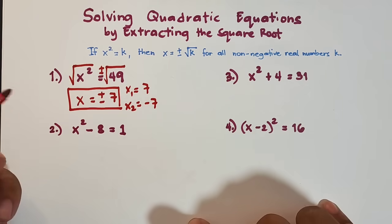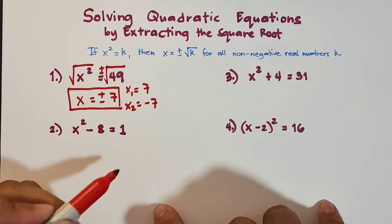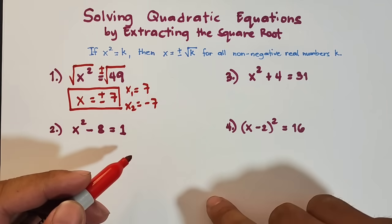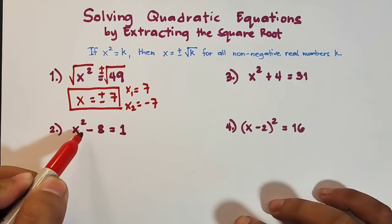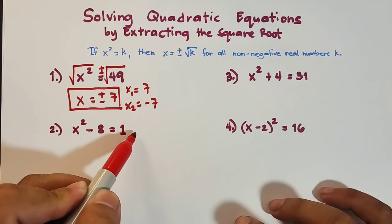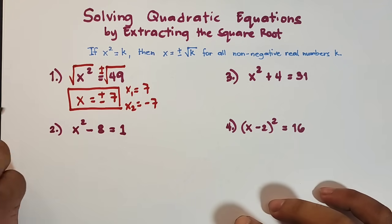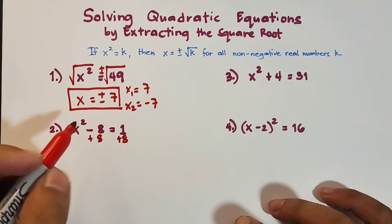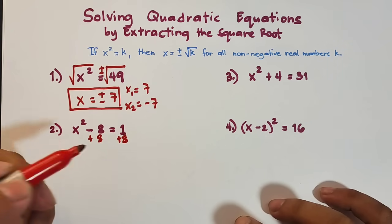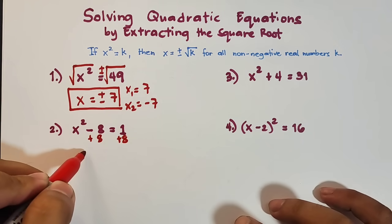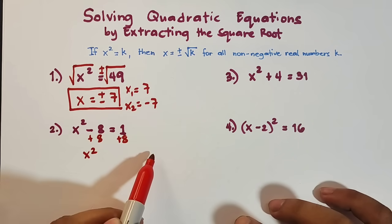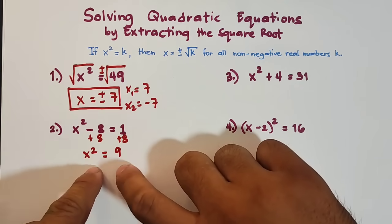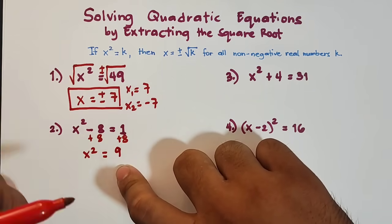Now let's continue with item number 2. In number 2 we are given x squared minus 8 is equal to 1. It's not yet in the required pattern, so we need to manipulate the equation by eliminating negative 8. We add 8 to both sides of the equation — negative 8 plus 8 equals 0, so it's eliminated. What remains is x squared, and on the other side 1 plus 8 equals 9.